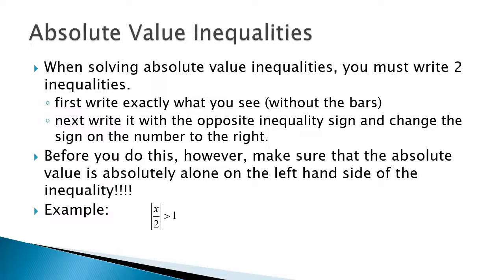For example, the absolute value of x over 2 is greater than 1. The absolute value is alone on the left-hand side, so we're ready to split it up. We write x over 2 is greater than 1 — what the problem stated — and then x over 2 is less than negative 1. Solving both parts, the answer is x is less than negative 2 or greater than positive 2. The reason for the 'or' is you can't have a number that is both of these things at the same time.